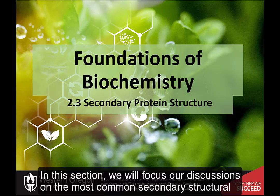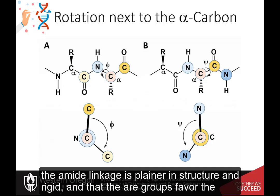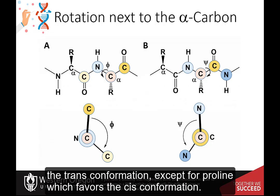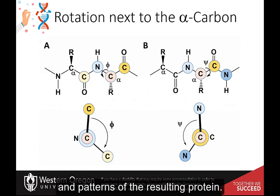In this section, we will focus our discussions on the most common secondary structural features in proteins. In the previous lecture, we learned that the carbon-nitrogen bond in the amide linkage is planar in structure and rigid, and that the R groups favor the trans-conformation, except for proline, which favors the cis-conformation. This rigidity within the protein backbone limits the folding potential and patterns of the resulting protein.